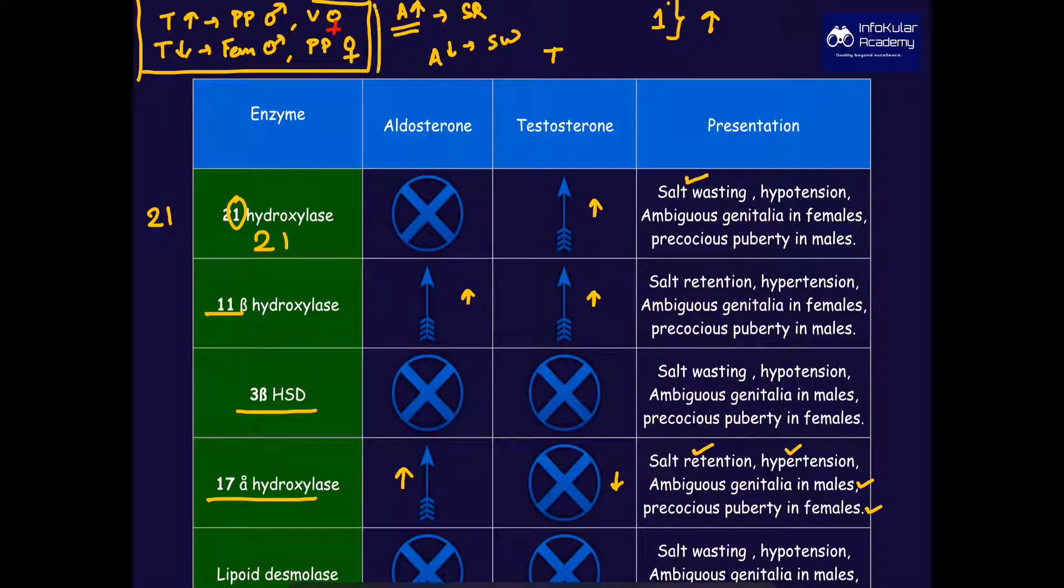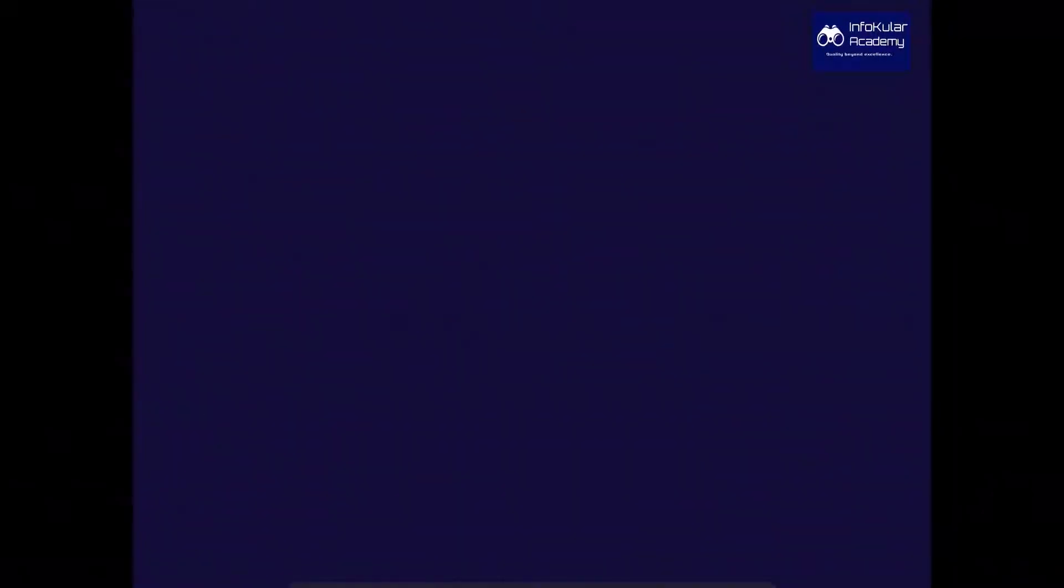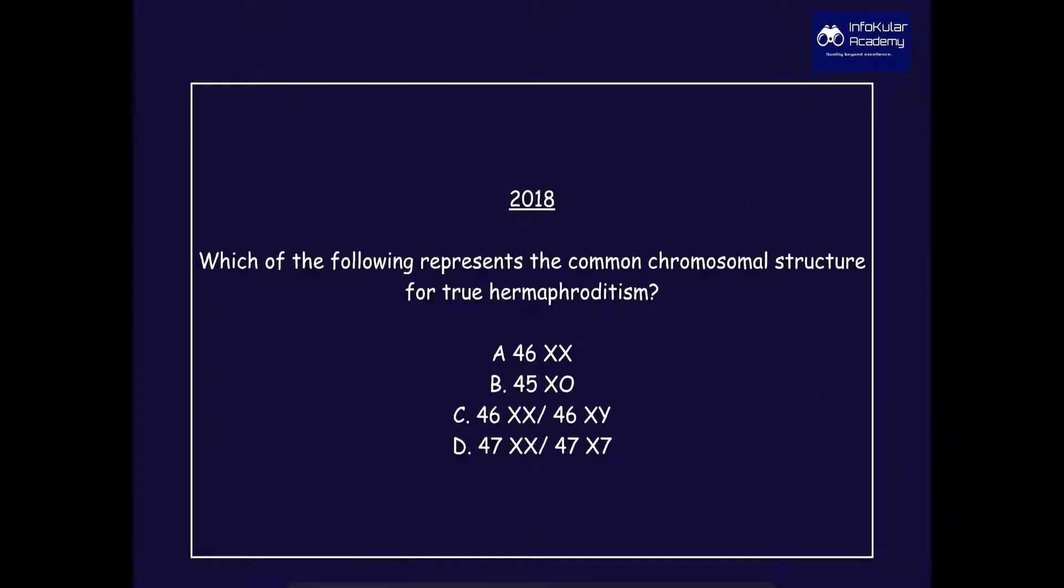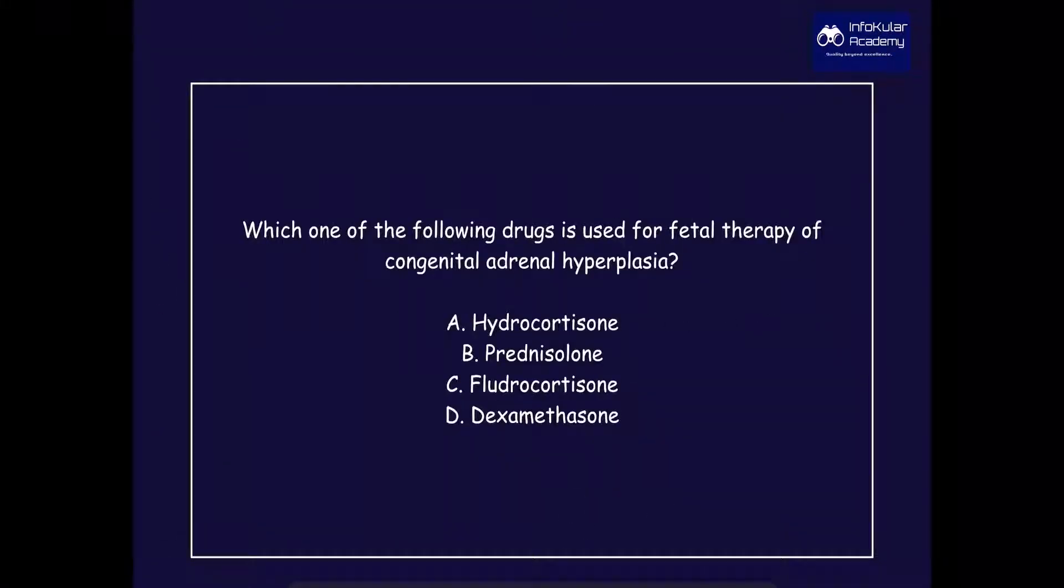Now let's solve a few questions and see how much of the concept is clear. This question came in 2018: which of the following represents the common chromosomal structure for true hermaphroditism? We said that 90% of the cases are associated with 46,XX. Next question is which one of the following drugs is used for fetal therapy of congenital adrenal hyperplasia? So dexamethasone is the drug of choice in such conditions.